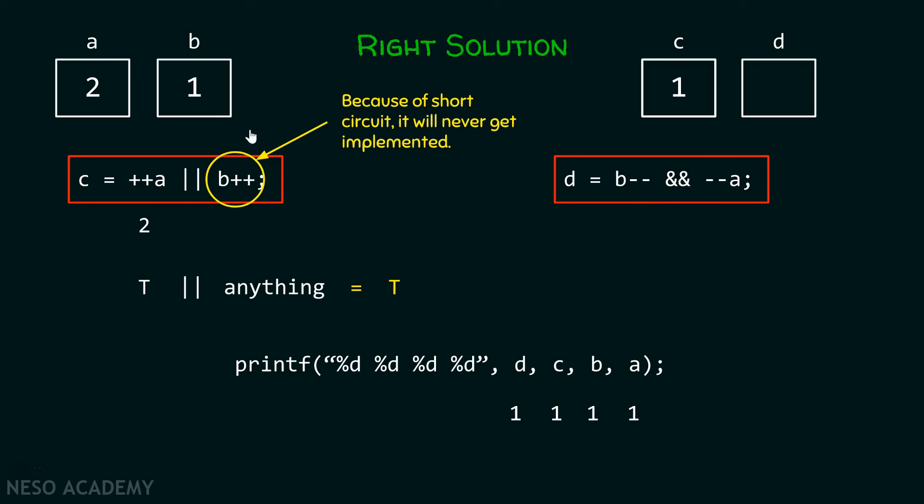Now, this is the post decrement. This simply means it takes the value 1. 1 means true. Pre-decrementing the value of a will make this value 1. And after that, we will use this value in this expression. This also means true. True and true is equal to true. Therefore, d will store value equals to 1. But wait. After the completion of this expression, this will get evaluated. This simply means that 1 will get updated to 0.